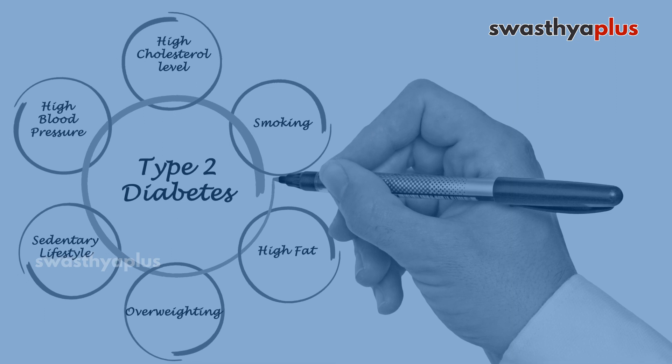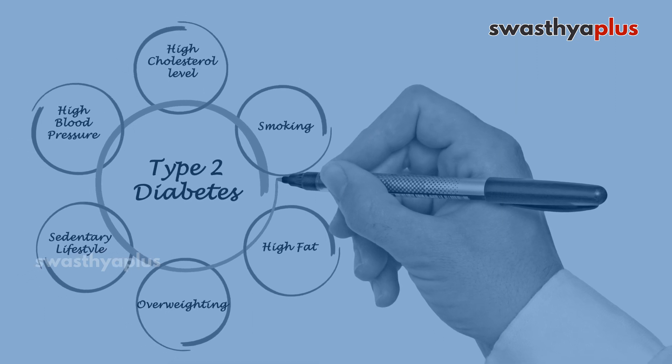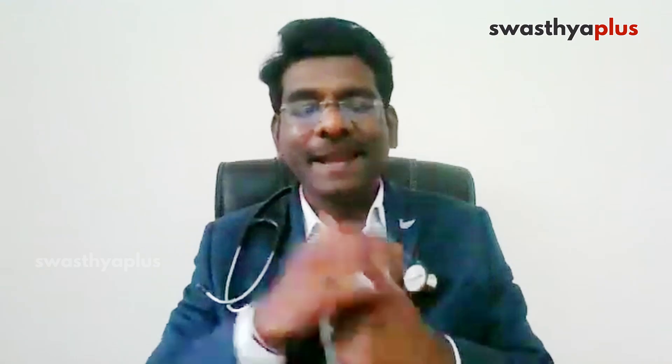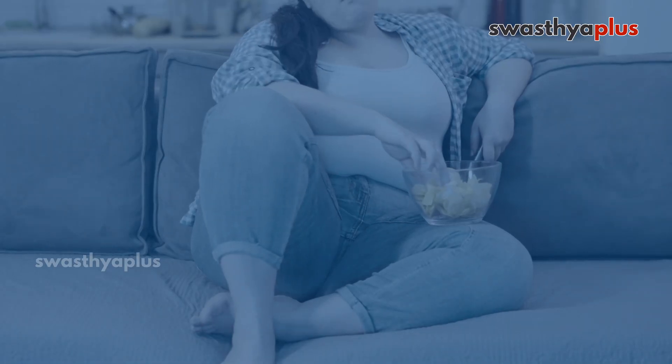If we take type 2 diabetes, the causes may be like unhealthy lifestyle, improper diet, lack of physical activity, sedentary lifestyle, and stress. All these factors are increasing the risk of getting diabetes, especially type 2 diabetes which happens in adults.